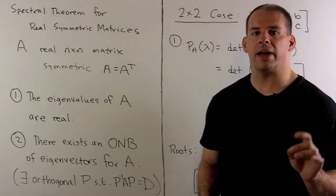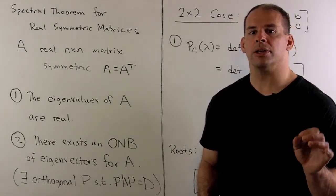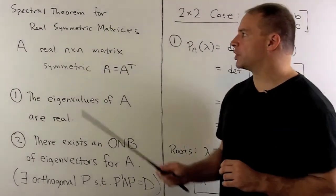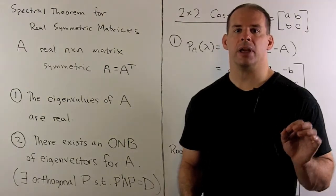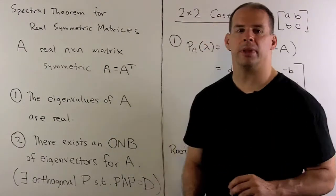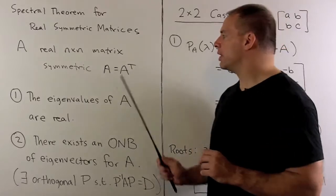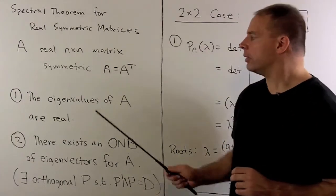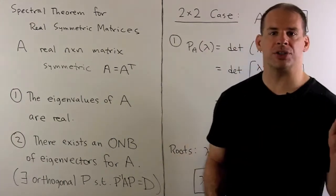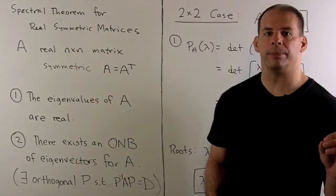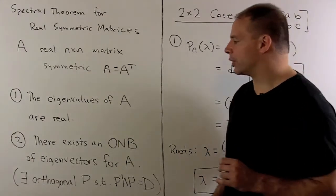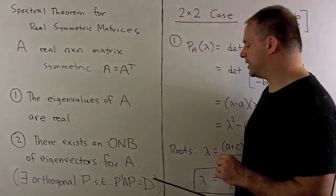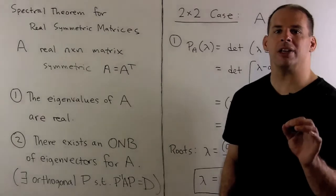Here, we want to verify the Spectral Theorem for Real Symmetric 2x2 Matrices. The Spectral Theorem for Real Symmetric Matrices says: A is a real n-by-n matrix, A is also symmetric, so A equals A transpose. Then the eigenvalues of A are real, and there exists an orthonormal basis of eigenvectors for A. In other words, there exists an orthogonal matrix P such that P inverse AP equals D, where D is a real diagonal matrix.